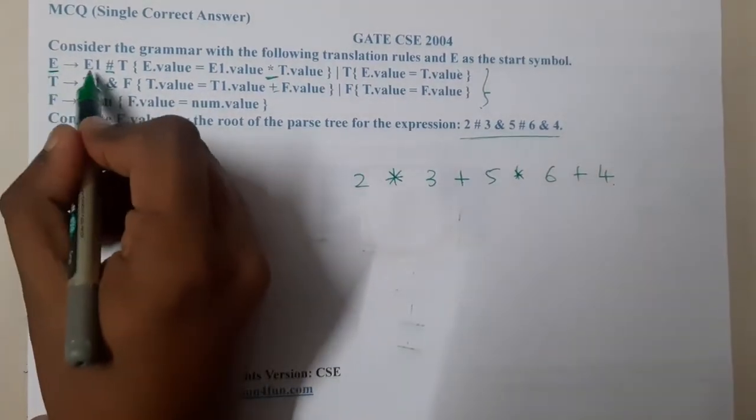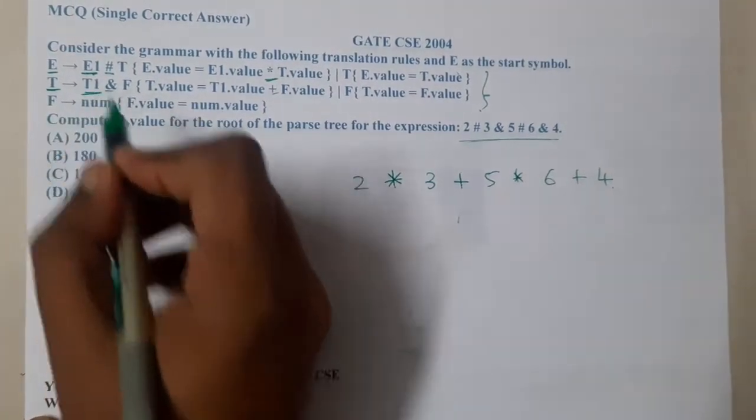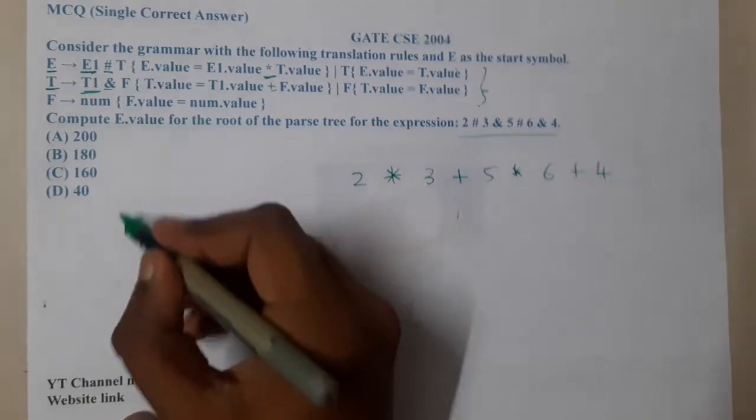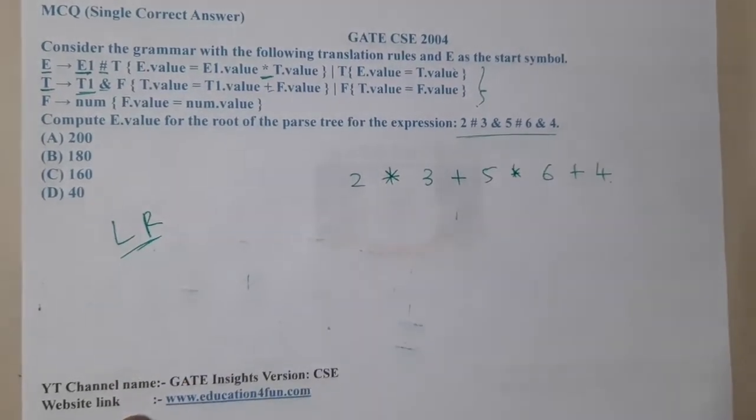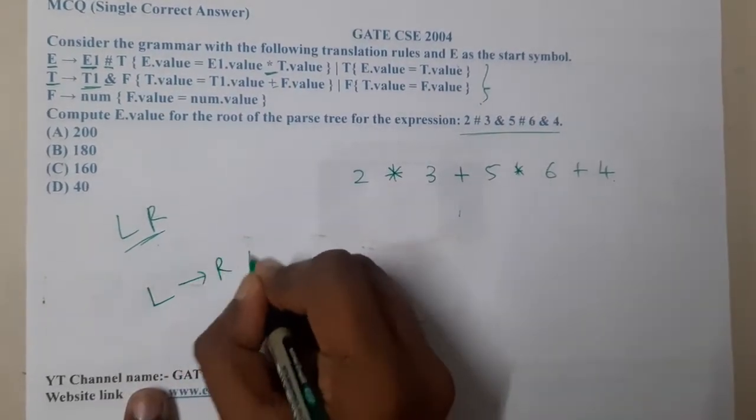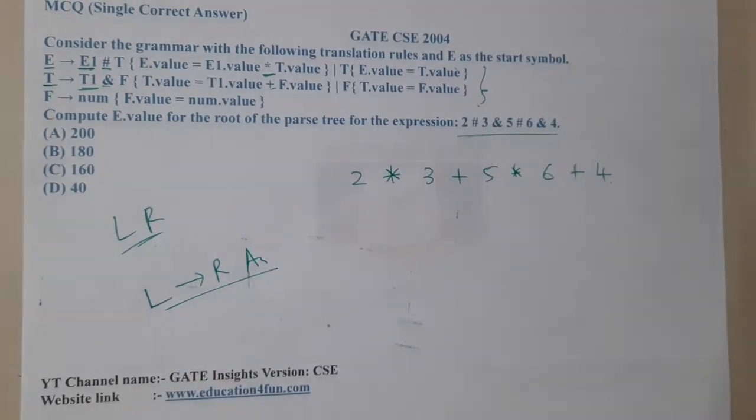If you observe carefully, this is E, this is E, this is T, this is T. Both of them are having left recursion, which means they are going to have left to right associativity. And one more important thing is what is the precedence.